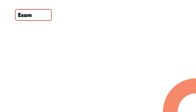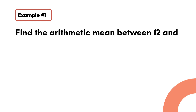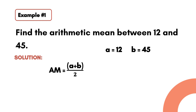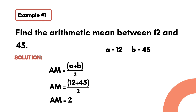Let's have the first example: find the arithmetic mean between 12 and 45. We let a be equal to 12 and b be equal to 45. We copy the formula for arithmetic mean and substitute the values. We simplify by adding the numerator and dividing by the denominator. So, arithmetic mean is equal to 28.5.